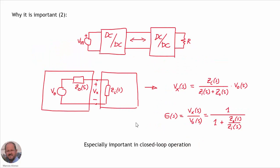Another interesting application of the output impedance of a DC-DC converter is to study dynamically the interaction of two DC-DC converters operating in cascade. Here we have these two DC-DC converters. We can model the first converter with the equivalent output voltage and the output impedance, and then the second can be modeled by using the input impedance. Our task is to study how the voltage at the interface between both converters is going to behave.